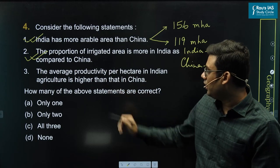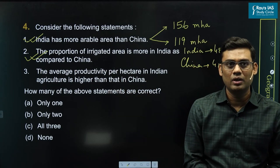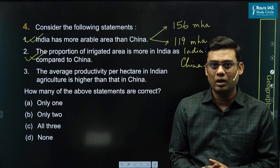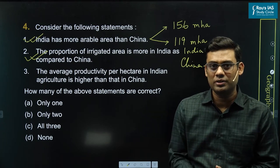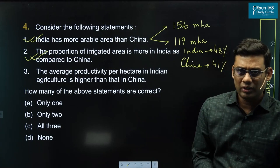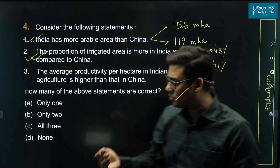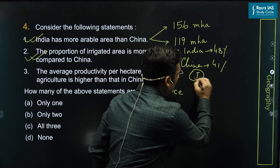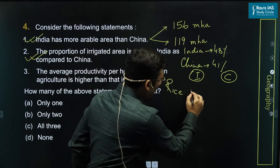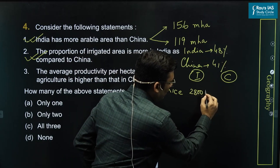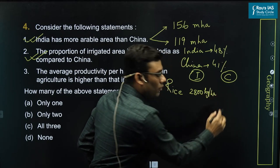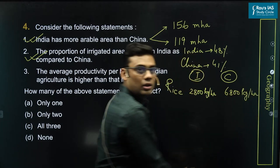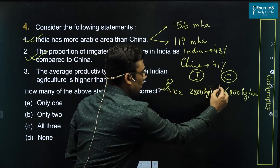The third statement: the average productivity per hectare in Indian agriculture is higher than that in China. In general, agricultural productivity in China for different crops exceeds by almost 50 to 100% compared to India. For example, for rice, the yield in India is almost 2,800 kg per hectare, whereas in China it reaches 6,800 kg per hectare. So yields in China are definitely higher for rice.